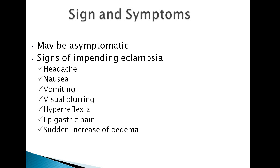There are signs and symptoms. The general idea: the patient had pregnancy-induced hypertension, which is high blood pressure after 20 weeks of pregnancy. And if the patient had protein in the urine, we started to diagnose her to have preeclampsia.